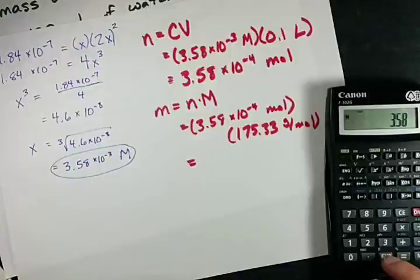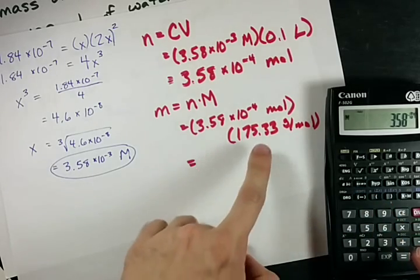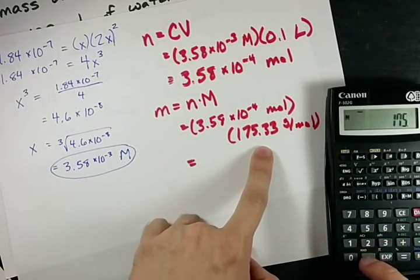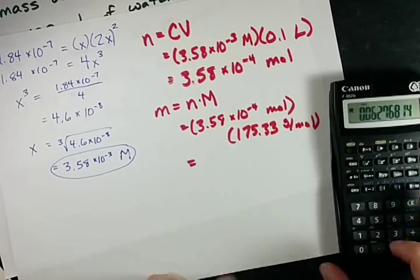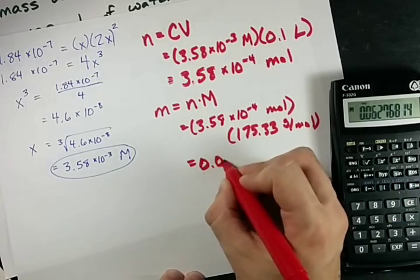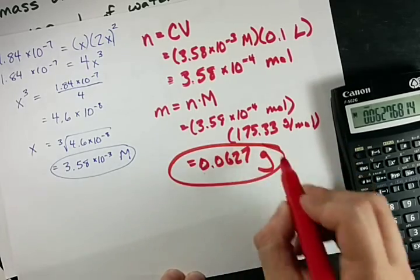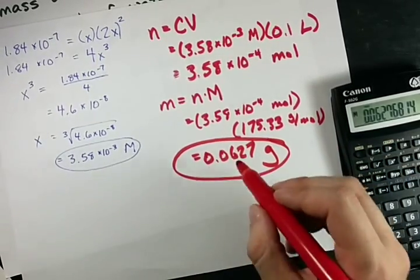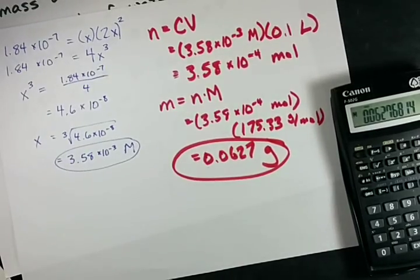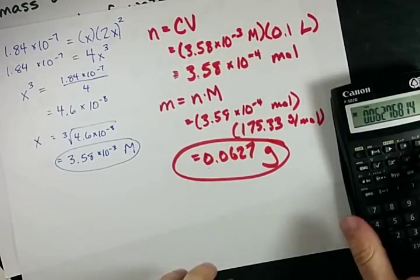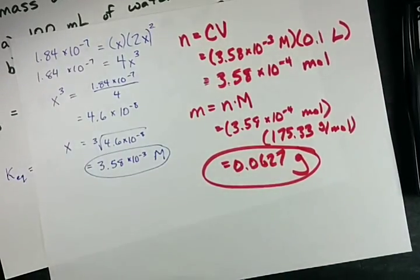3.58 times 10 to the minus 4 times 175.33 grams per mole is 0.0627 grams. I could dissolve that mass of BaF2 in my water, pure water. So that was easy.